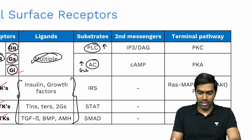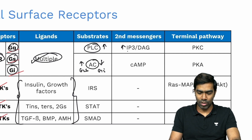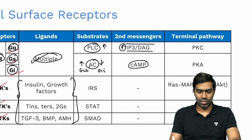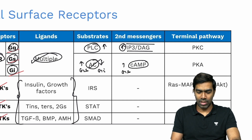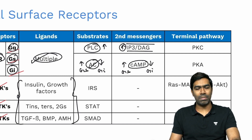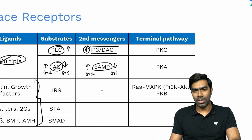For the Gs and Gi pathways, adenylate cyclase is the most important substrate. In the G-stimulatory pathway, adenylate cyclase activity increases; in the G-inhibitory pathway, it decreases. When phospholipase C is activated (Gq), it produces more IP3 (inositol triphosphate) and DAG (diacylglycerol). For the Gs/Gi pathways, cyclic AMP is affected — increased in Gs and decreased in Gi.